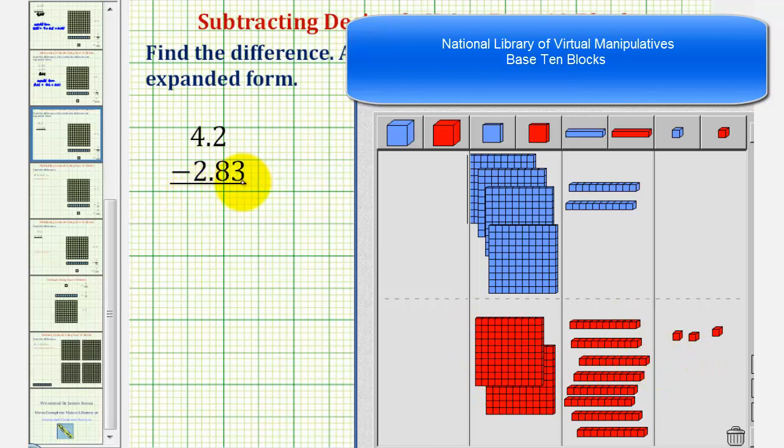So for 2.83, we have two flats for two ones, eight longs for eight tenths, and three bits for three hundredths. And again, because we're subtracting, we want to remove this many base ten blocks from 4.2.